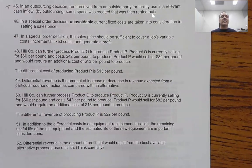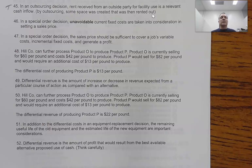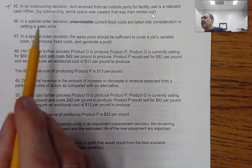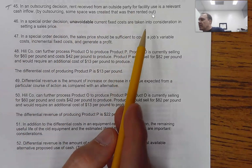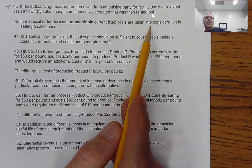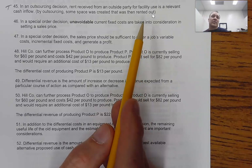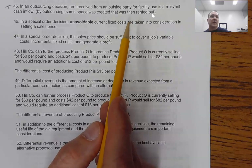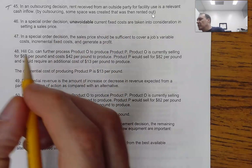Question 46 says: 'In a special order decision, unavoidable current fixed costs are taken into consideration in setting a sales price.' We talked about this already — this is going to be false. By saying they 'are taken into consideration,' we're implying that it's a relevant item, and that is not true.